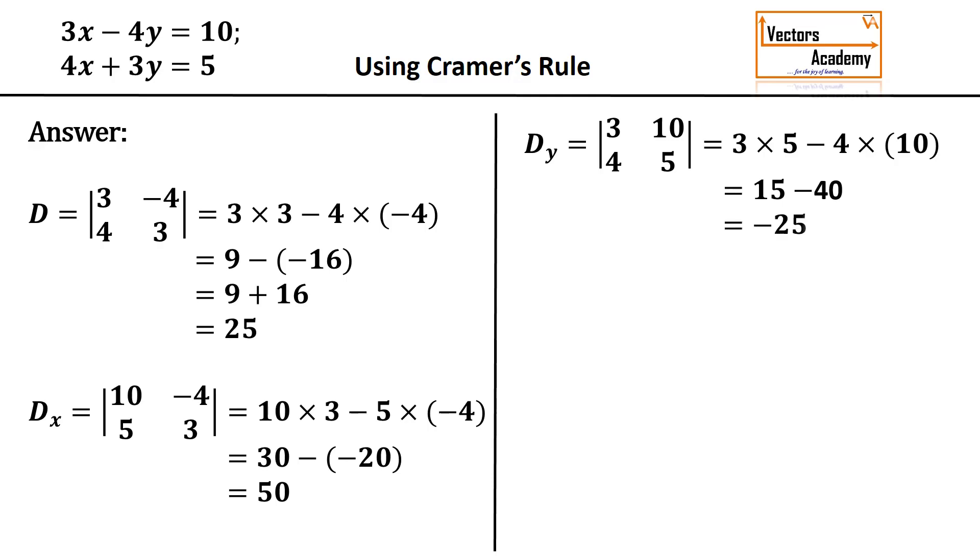Now how is x calculated? x is calculated by Dx upon D that is 50 upon 25 that will be 2 and y is calculated by the formula Dy upon D that is minus 25 by 25 that is minus 1. This is how we solve the equations using Kramer's rule.